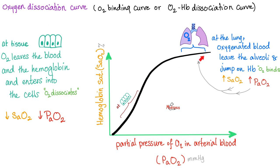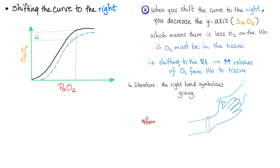This black curve is the normal curve. We can shift it to the right or left. Here is an example of a shift to the right - we went from black to blue. To understand what happens, take the same point on the x-axis and go up until we intersect with the new curve shifted to the right and the old curve. What happened to SaO2? The new curve has a lower SaO2 than the old curve. Translation: when you shift the curve to the right, oxygen saturation decreases, which means oxygen is leaving the hemoglobin and jumping on the tissue. Therefore, oxygen is being given to the tissue. In literature, the right hand symbolizes giving. We are giving oxygen to the tissue.